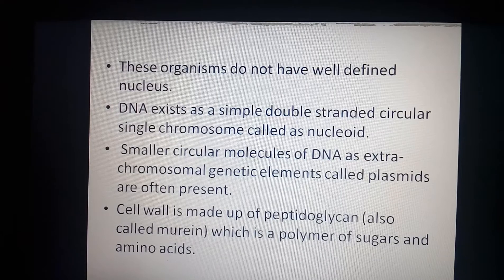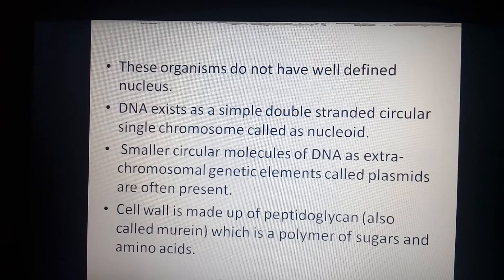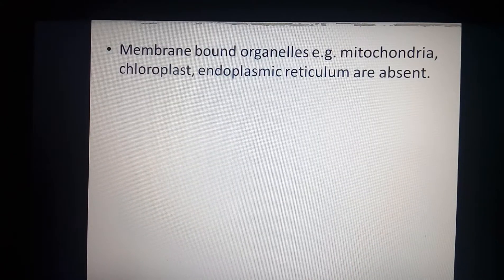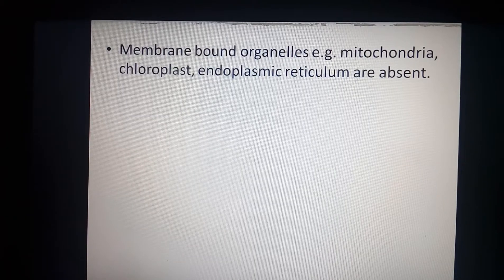The cell wall of these organisms is composed of peptidoglycan, generally of murein type. Peptidoglycan is a polymer of sugar and amino acids — peptides are chains of amino acids, and glycan refers to glucose. Membrane-bound cell organelles are absent. Examples of absent organelles include mitochondria, chloroplast, endoplasmic reticulum (rough ER and smooth ER), and Golgi complex.